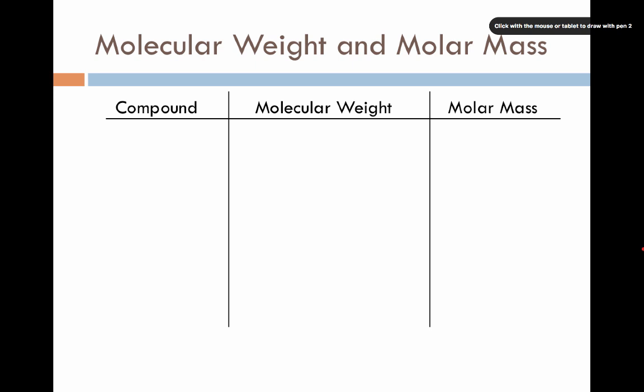So just like before, we can do the same kind of table that we made with our elements. We can make a table here, and we can use the example we just had, H2O compound, its molecular weight, we already added up to be 18.01 atomic mass units, and its molar mass, now we can say, is 18.01 grams per every one mole.